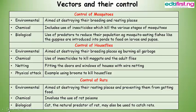Control of rats. Environmental method: aimed at destroying their resting places and preventing them from getting food. Chemical method: involves the use of rat poisons. Biological method: cats, the natural predator of rats, may also be used to catch rats.